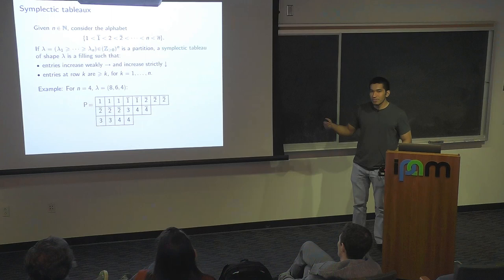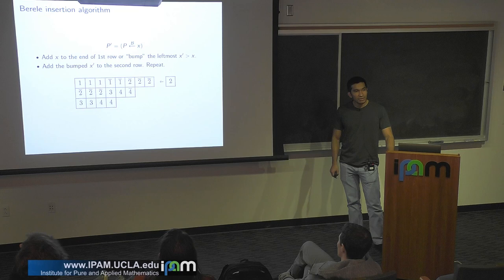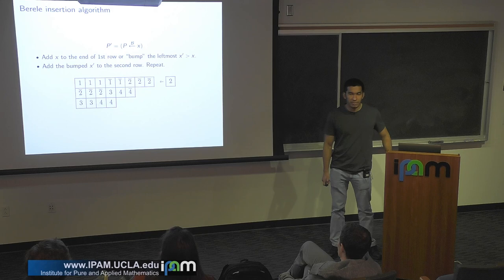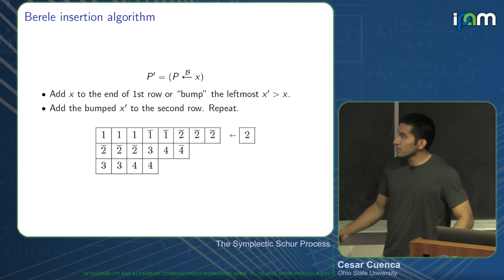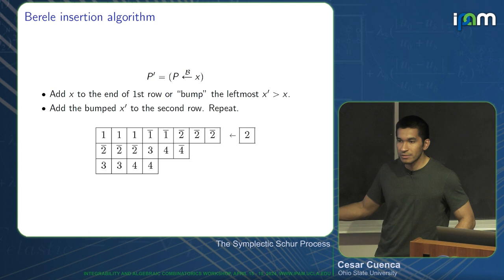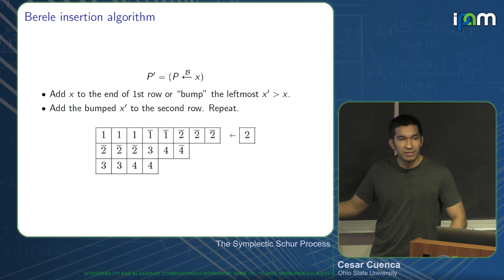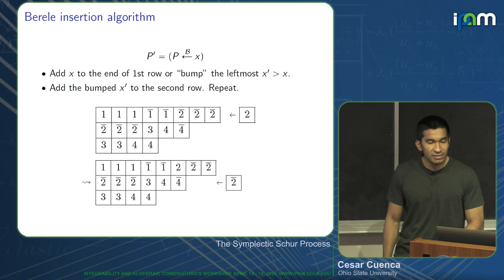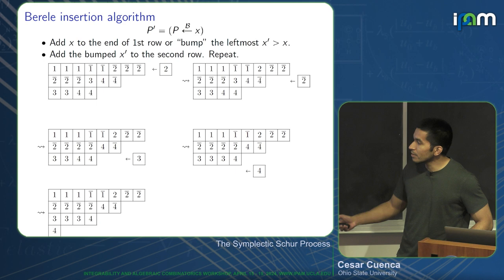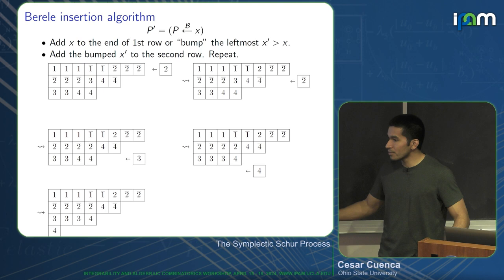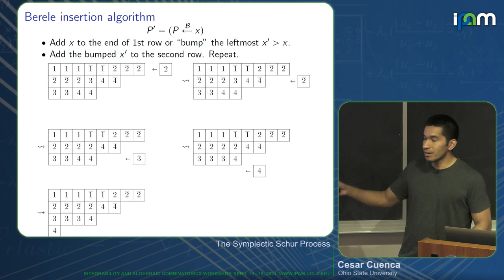Now we introduce the Borel insertion algorithm. Think of this as a symplectic version of the RSK–Schensted algorithm. If you insert an x into the symplectic tableau P, that gives a new symplectic tableau P-bar. It proceeds by steps: you take your number and try to put it at the end of the first row. If impossible, it bumps the leftmost element, which then moves to the second row, and you keep going until finished.